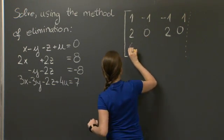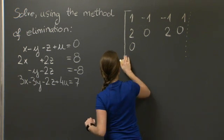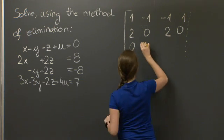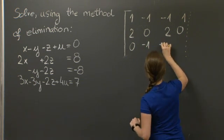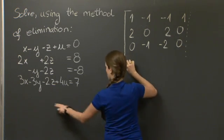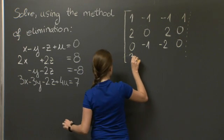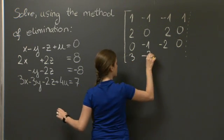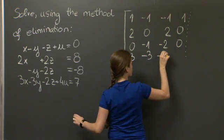The third equation is 0, -1, -2, 0. And the fourth row, corresponding to the fourth equation, is 3, -3, -2, 4.